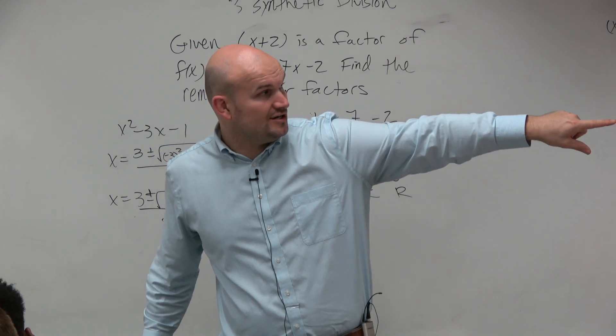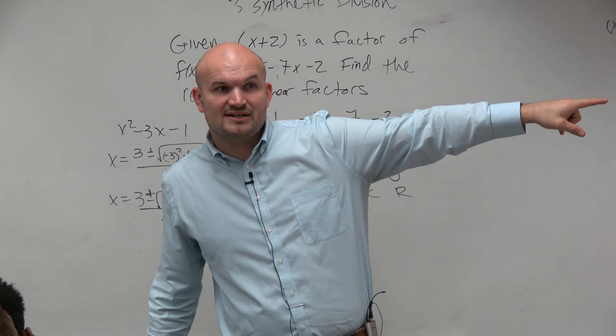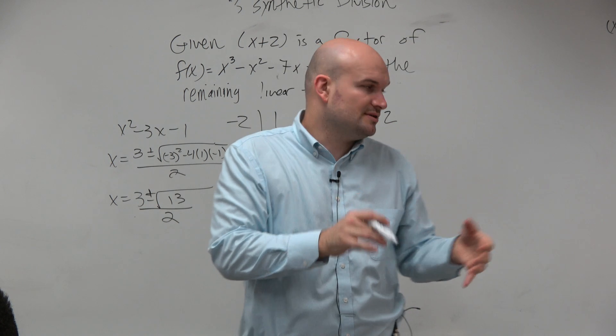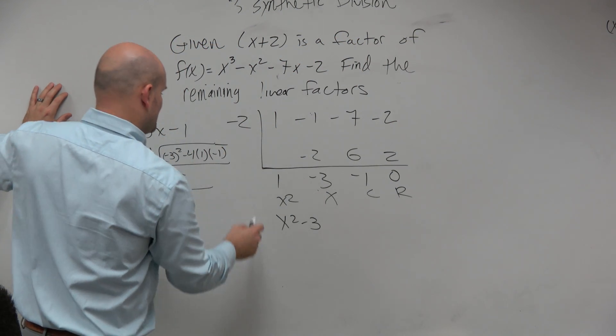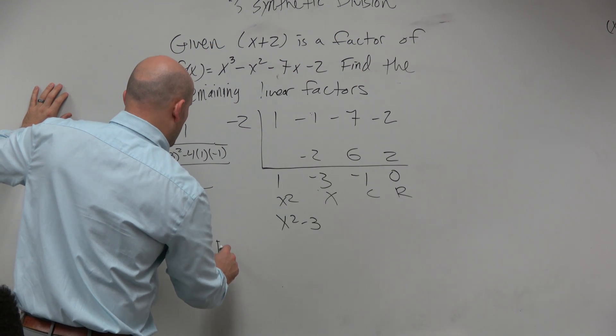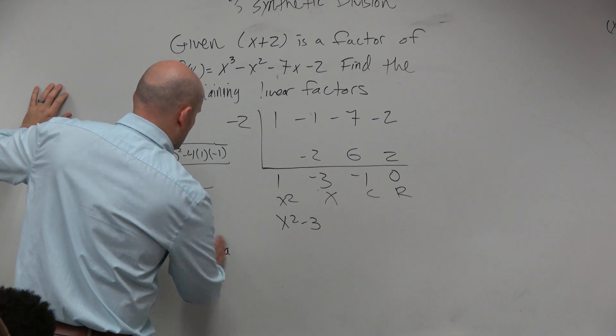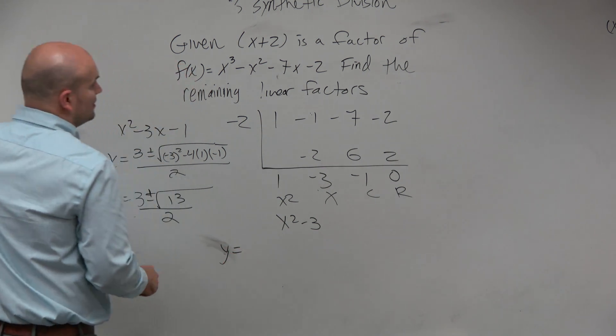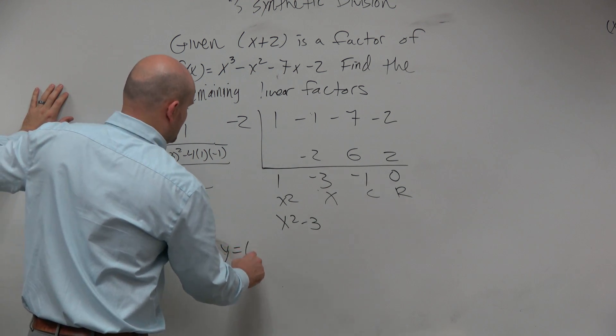Guys, if I give you the zeros, can you go back and write them as factors? Right? Just think of your zeros and then setting them equal to 0. So my factors, my remaining factors, is I can basically rewrite this equation as y equals, or find the remaining factors, so y equals x plus 2.